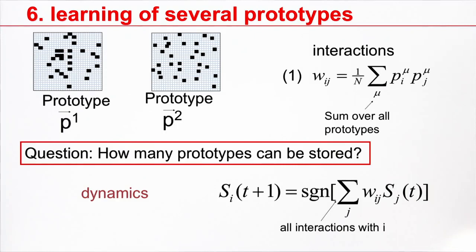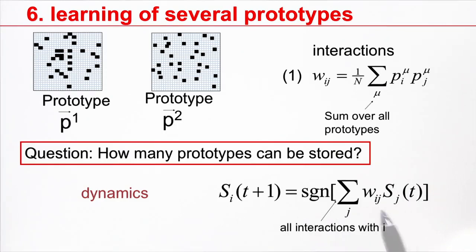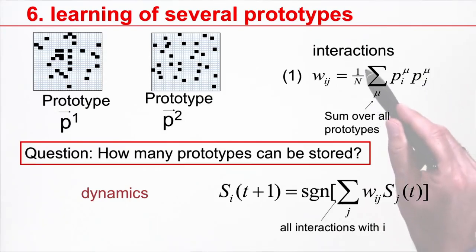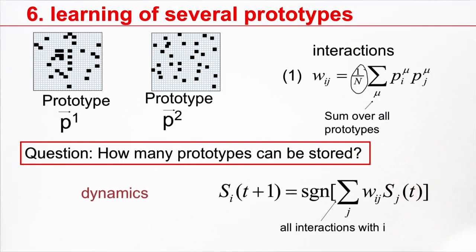Here again are the rules of the game in the Hopfield model. I have a dynamics, binary state variables, and this dynamics includes weights. The weights are just the sum over the different contributions of the different patterns. I added here a 1 over n in front, which has no real meaning because I look at the sign afterwards, but it simplifies a little bit the calculations.